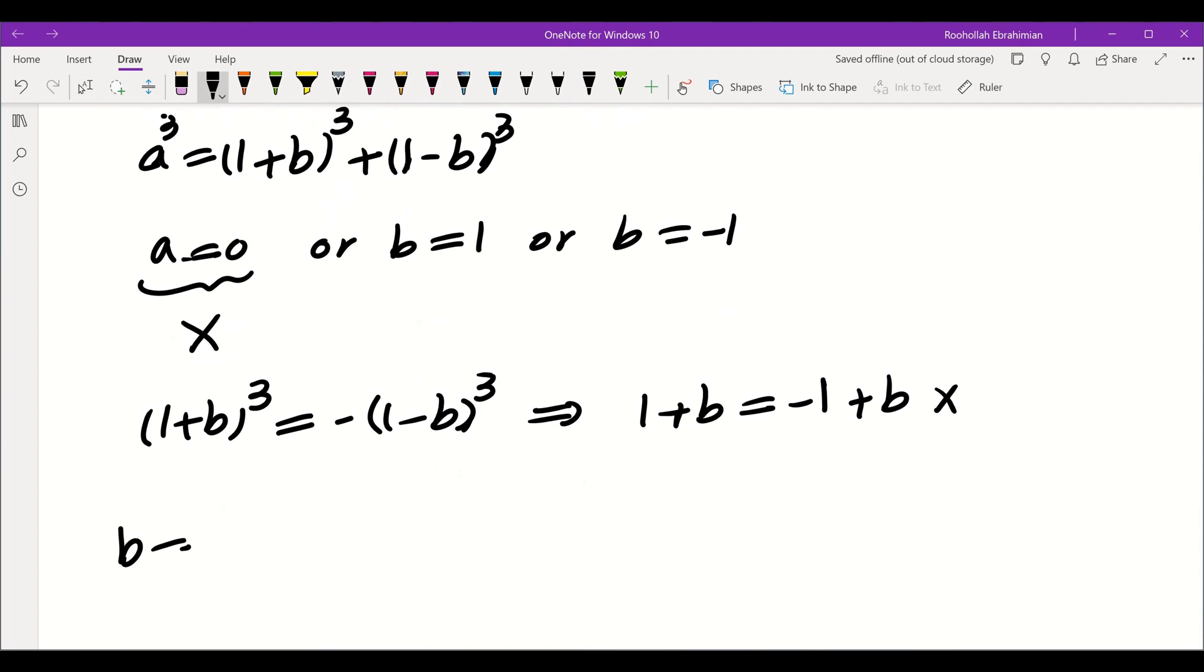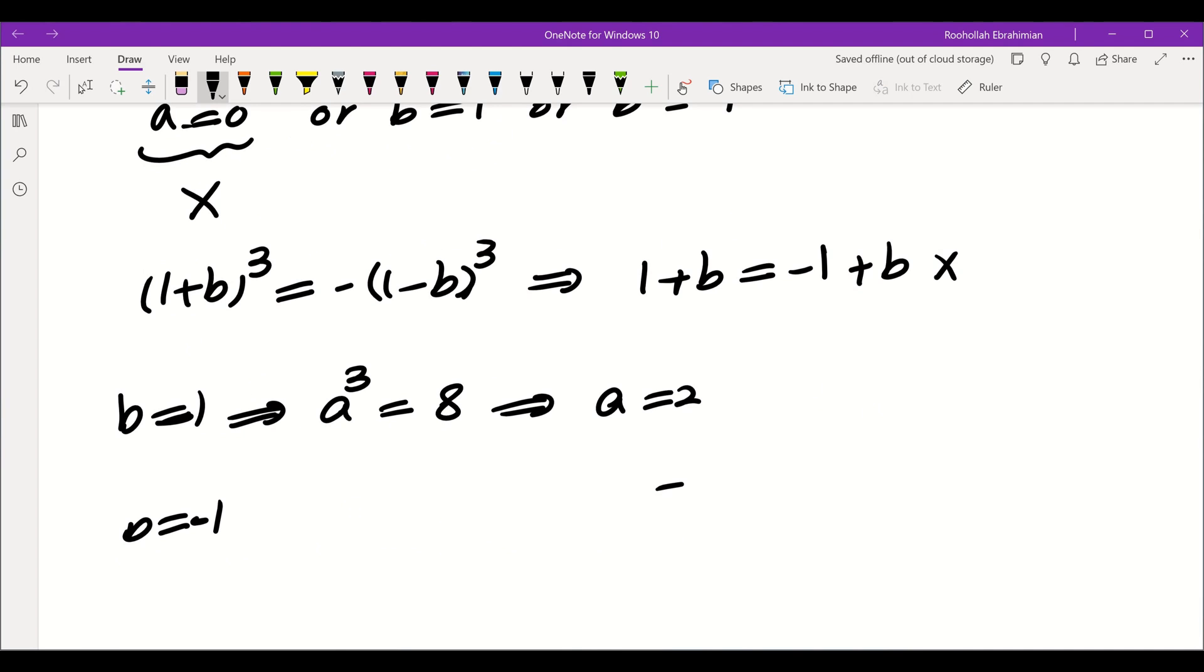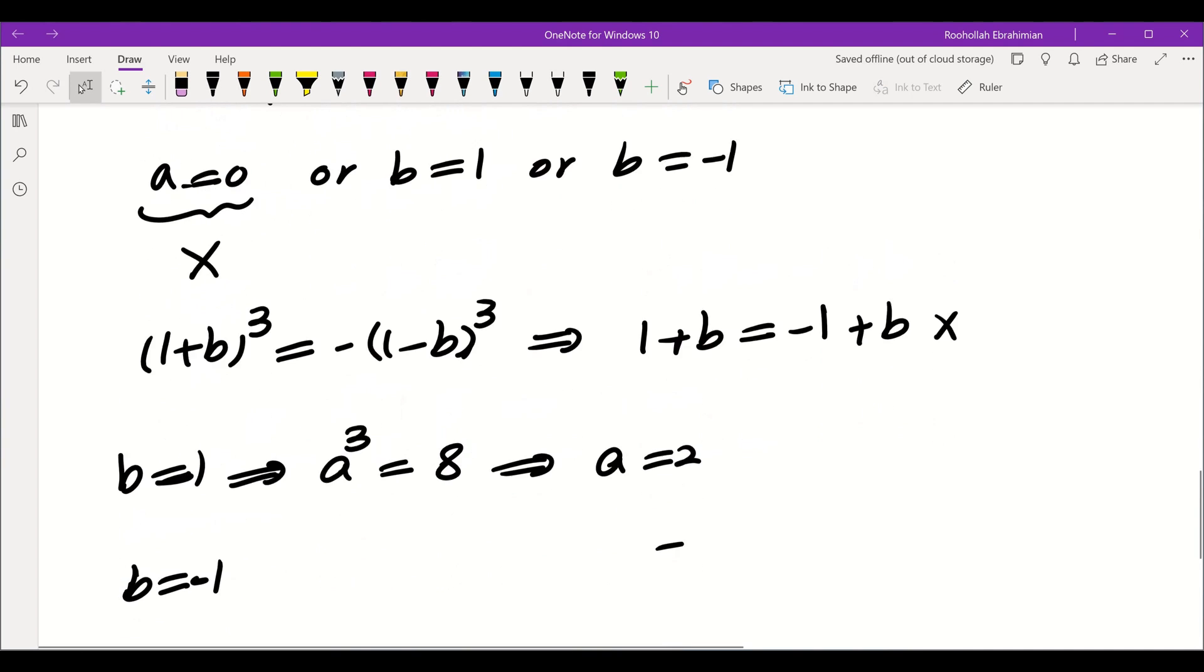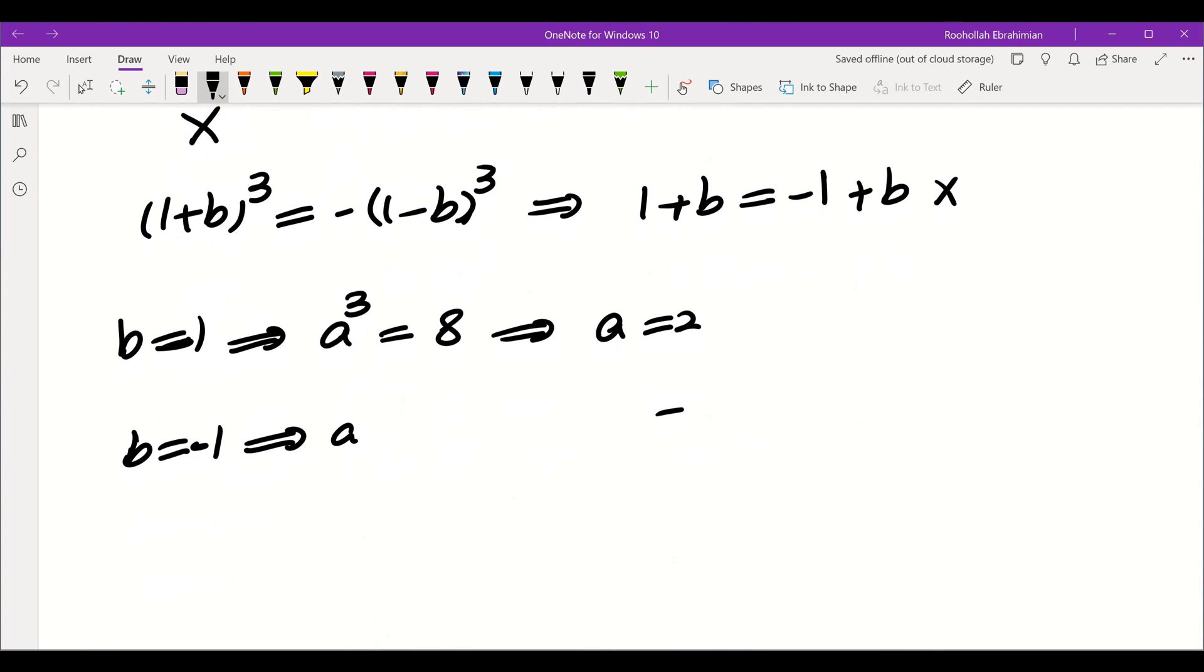If b is 1, we will get a cubed equals 8, which would mean a is 2. And if b is negative 1, when you plug in negative 1 into the equation, we again get a cubed equals 8, which would mean a is 2. So we get the exact same solutions. a equals 2 and b equals plus or minus 1.